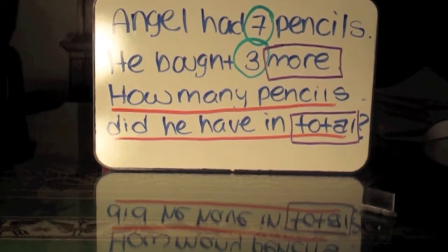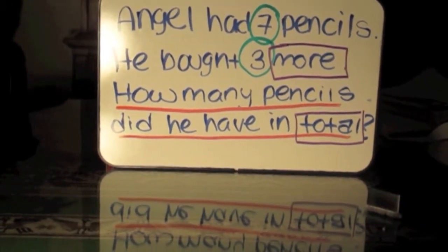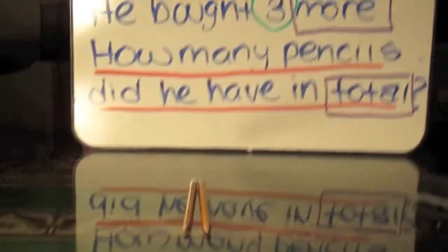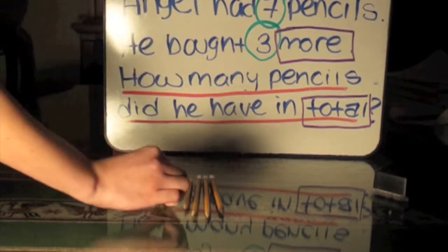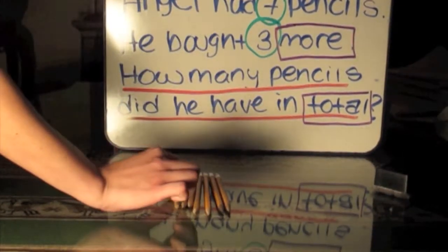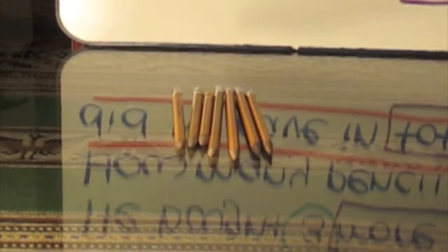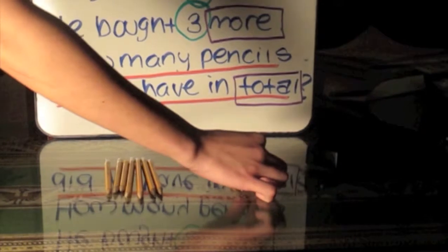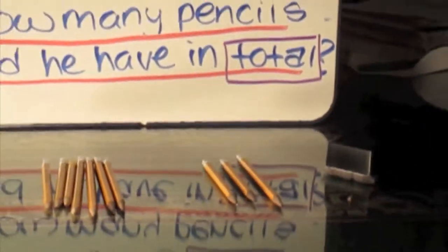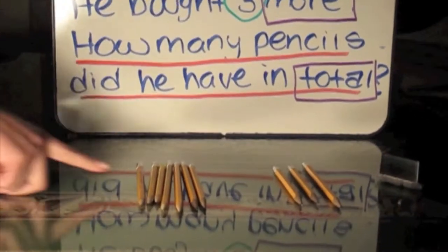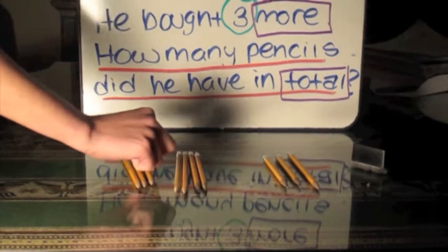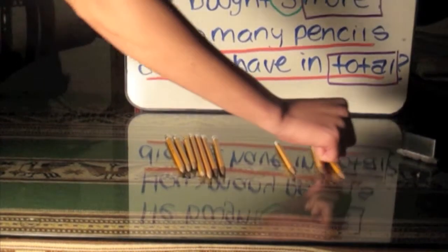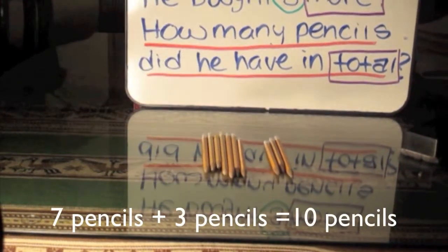Here is a demonstration. We have one, two, three, four, five, six, seven — seven pencils. Angel bought three more: one, two, three. How many pencils did he have in total? One, two, three, four, five, six, seven, eight, nine, ten. So Angel has ten pencils in total.